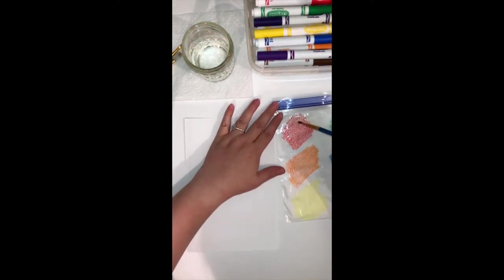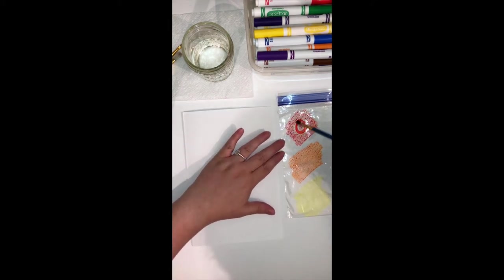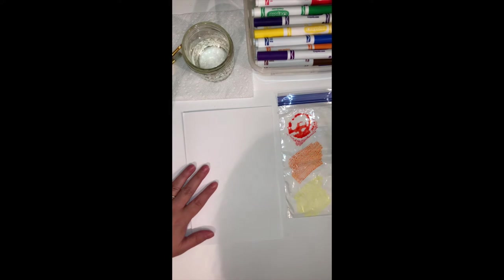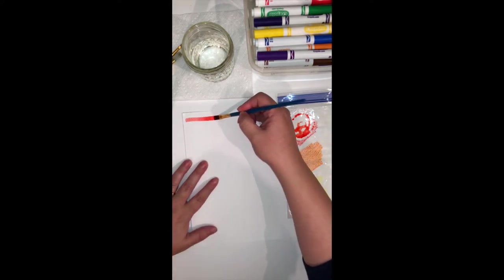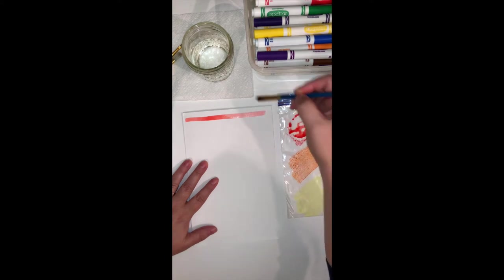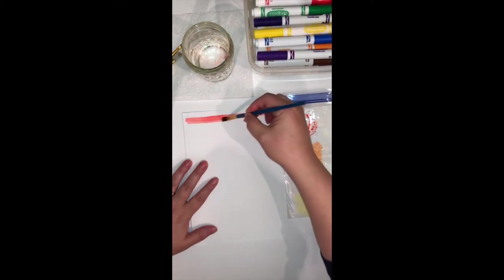So I'm gonna wet it just a little bit, and I'm gonna swirl it around in that marker that we colored right onto the plastic bag. See, I'm swirling, making sure to get that brush really loaded up with color. And now I'm going to paint just as though it's paint. So we had markers, and now we have paint—watercolor paints. Really cool, guys.